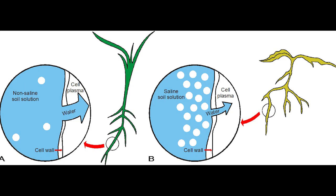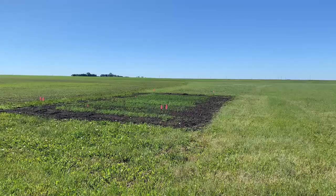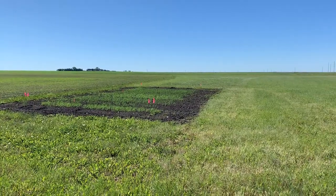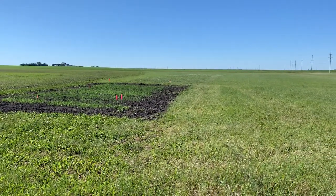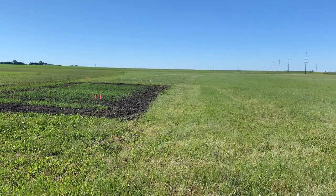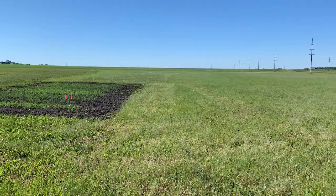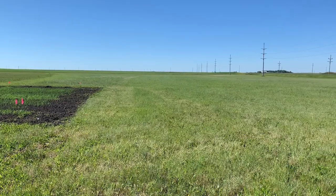Excess water-soluble salts compete with plant roots for water, whereas sodicity results in poor soil structure. Here at the Langdon REC, we have a saline sodic gradient that runs from east, where salt and sodicity levels are low, compared to west, where there are very high levels of salinity and sodicity.